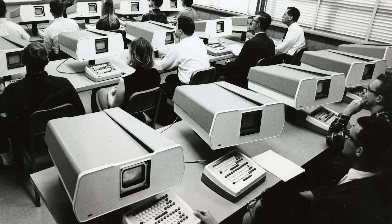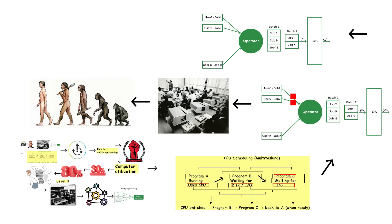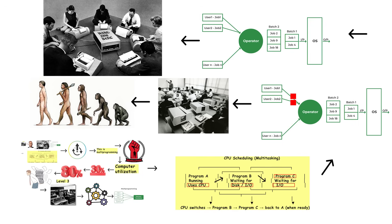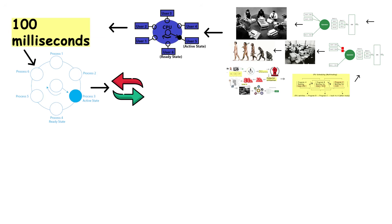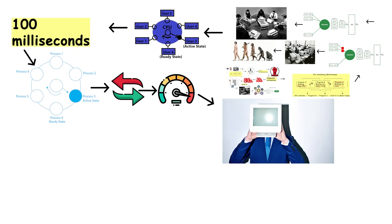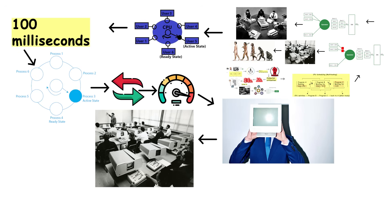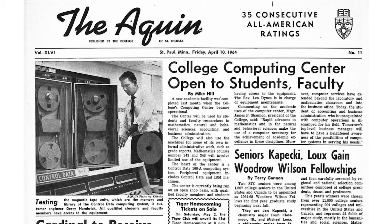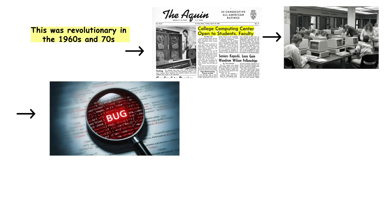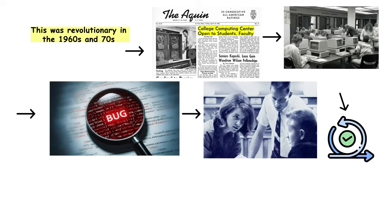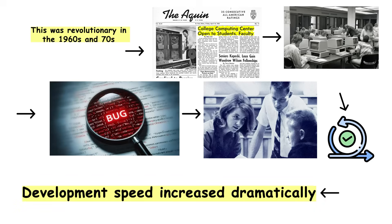Then came time-sharing — the next evolution. Instead of just running multiple batch jobs, what if multiple users could interact with the computer simultaneously? Time-sharing systems give each user a tiny slice of CPU time, maybe 100 milliseconds, then switch to the next user. The switching happens so fast it feels like you have the computer to yourself, even though 50 other users are logged in. This was revolutionary in the 1960s and 70s — programmers could debug code interactively, see immediate results, and iterate quickly.